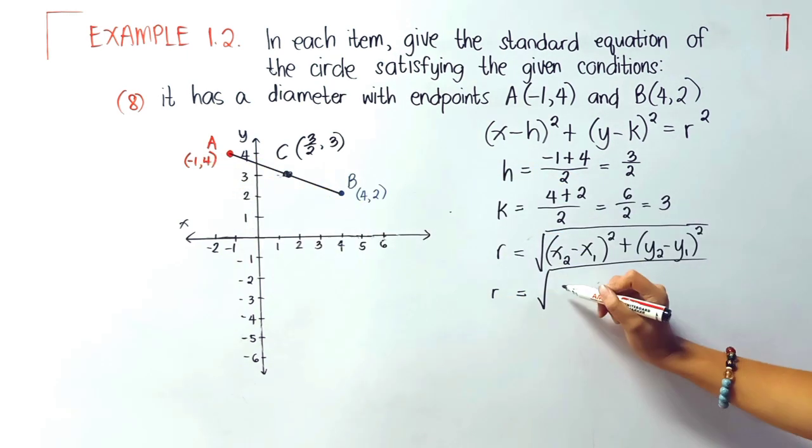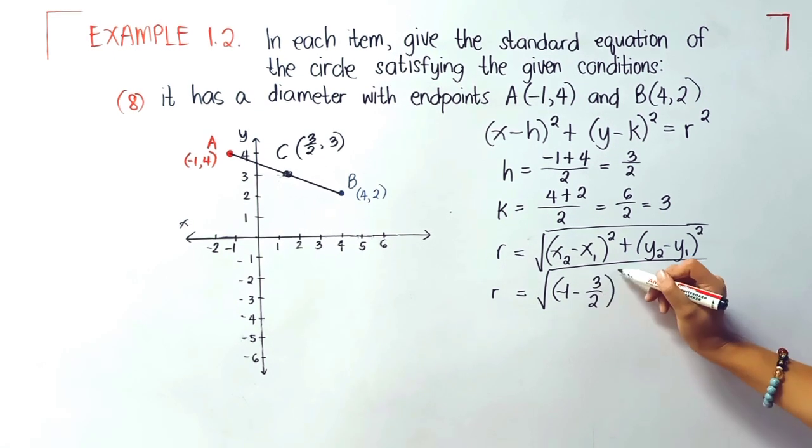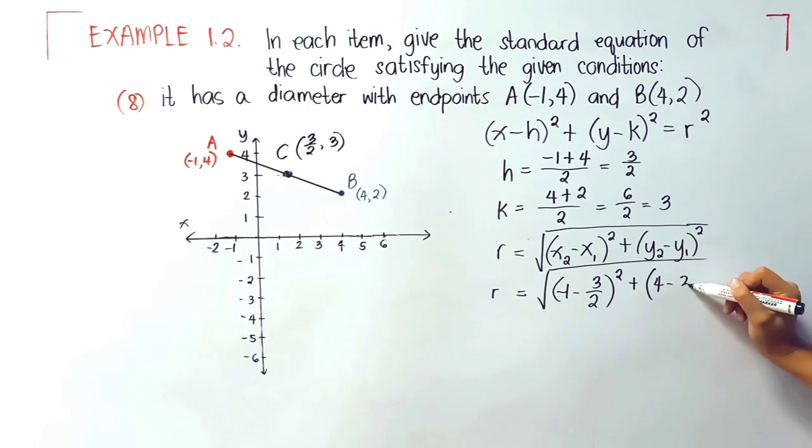Substituting the values, we have here (-1 - 3/2)² + (4 - 3)². That is equivalent to the square root of 29 over 4.